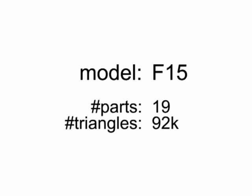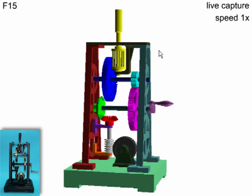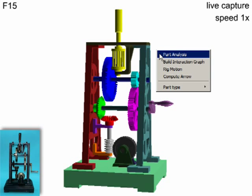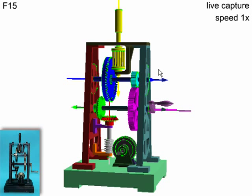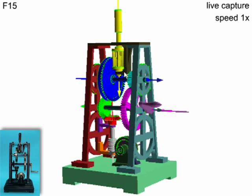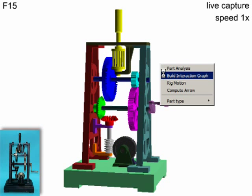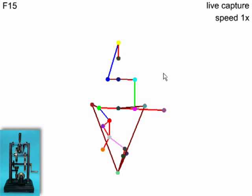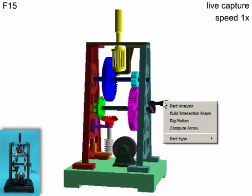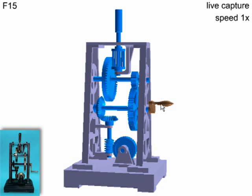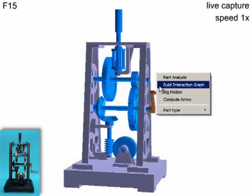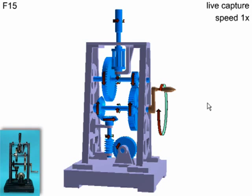Now we present some results and interaction sessions of our system. First we perform geometry analysis to construct the interaction graph. The user selects the driver and we compute the motion for the assembly. We then compute the arrows as described before and extract the causal chain sequence.